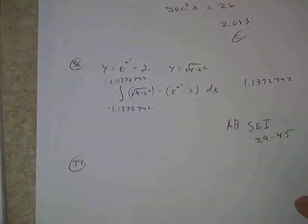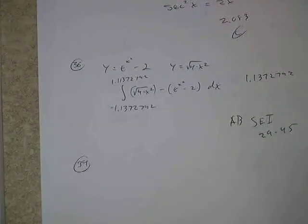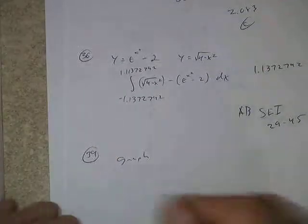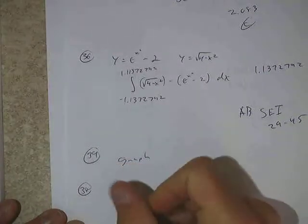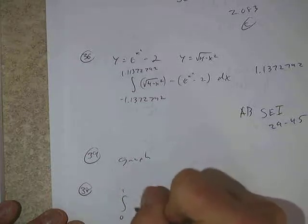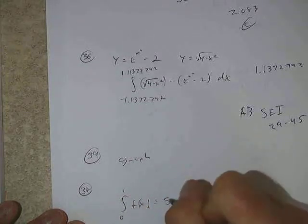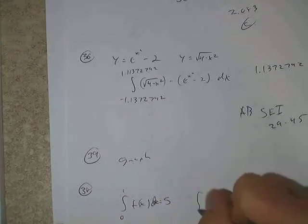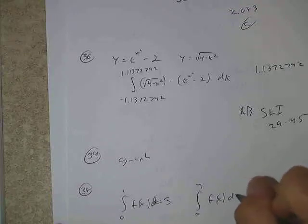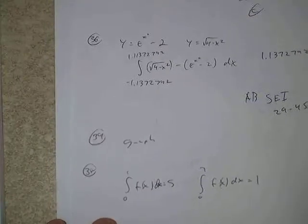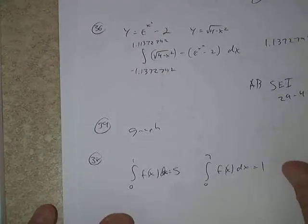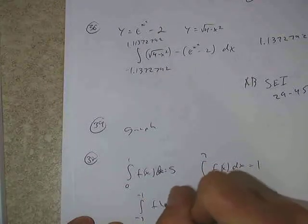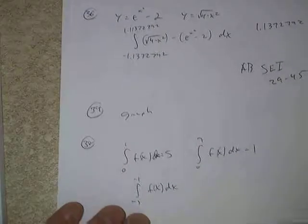Problem 38: f is an even function. We know that the integral from 0 to 1 of f(x) dx is 5. We know that the integral from 0 to 7 of f(x) dx is equal to 1. And our question is: what is the integral from negative 7 to negative 1 of f(x) dx?